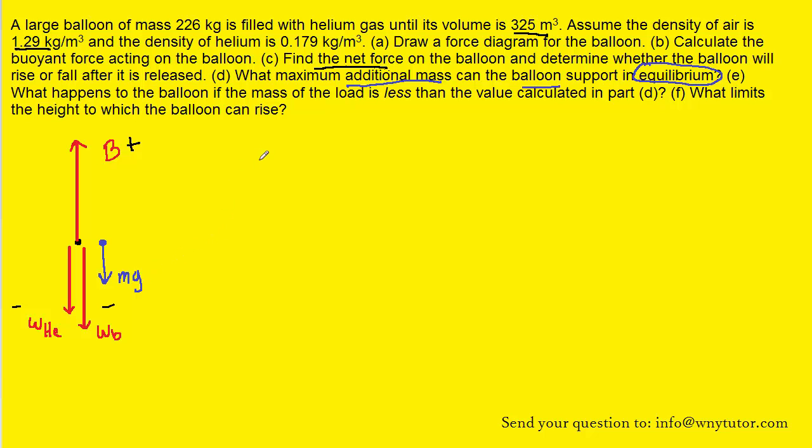So now we can go back to the sum of the forces in the y direction. And we're going to fill in basically the same forces as before except we're going to have a negative mg into the equation this time. Notice that we've enclosed in parentheses the buoyant force, the weight of the helium, and the weight of the balloon because we have already calculated those three forces added together in Part C of the question.